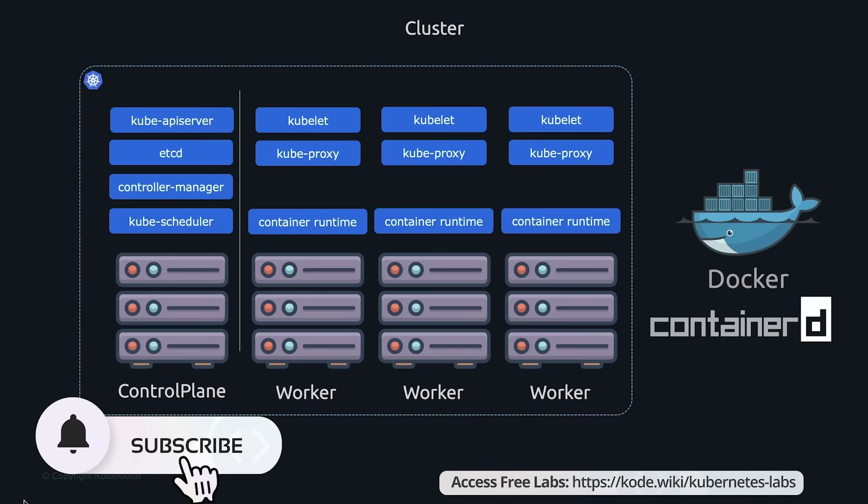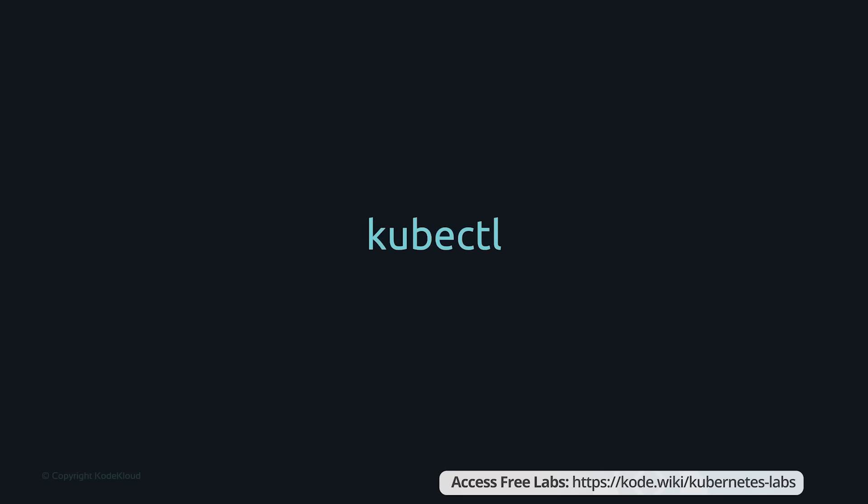Next, we'll look into the Kubernetes CLI. kubectl is the command-line utility of Kubernetes — the tool you would use to operate the Kubernetes cluster, such as to view the status of the cluster, provision applications, scale up, scale down, delete, and many other things.